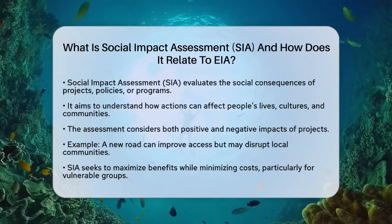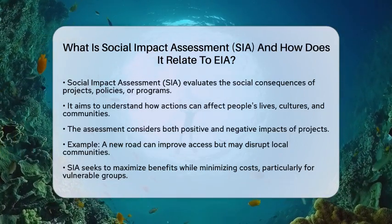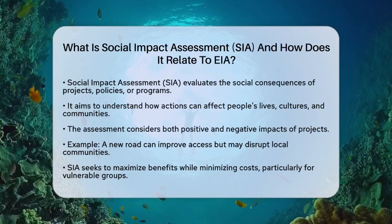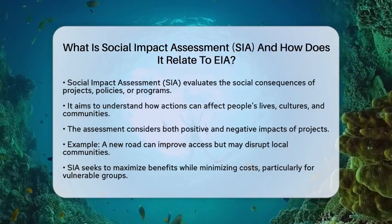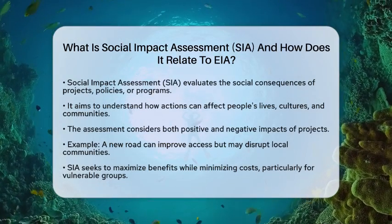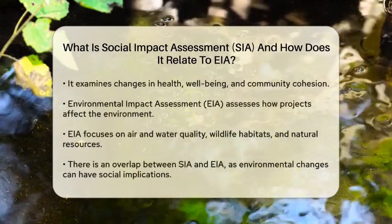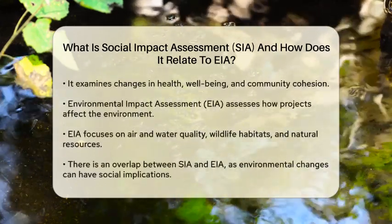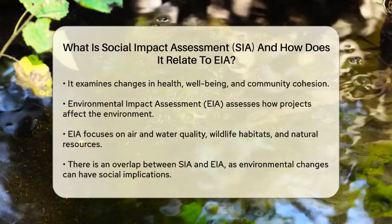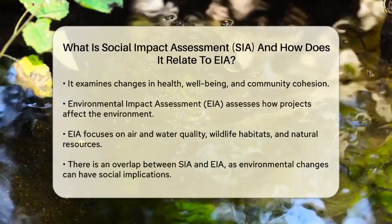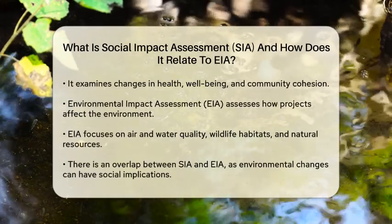For example, a new road might improve access but could also disrupt local communities. Social impact assessment aims to maximize benefits while minimizing costs, especially for vulnerable groups. It considers changes in health, well-being, and community cohesion, making sure that development is fair and just.